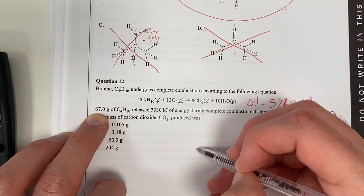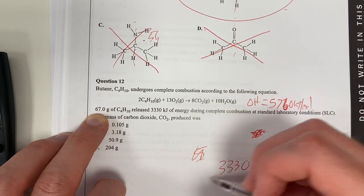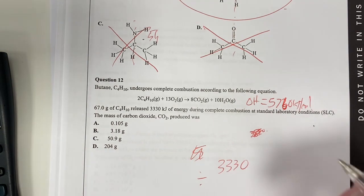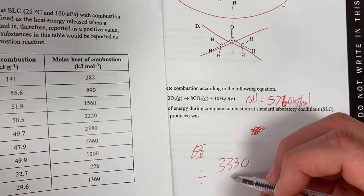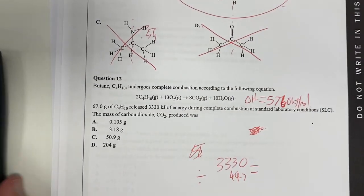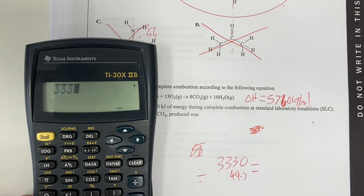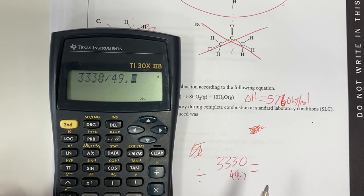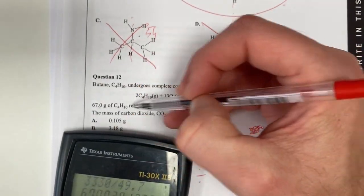All righty. 3330 divided by my heat of combustion. Actually, let's go back to that. Let's go divide by how much per gram, and I should get how many grams actually produced, divided by 49.7, equals 3330 divided by 49.7 gives me 60... So I know that it definitely did produce. That's right.